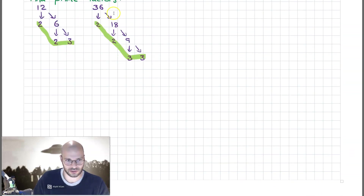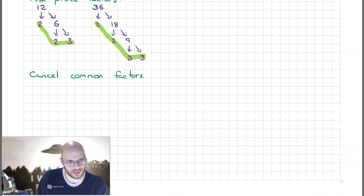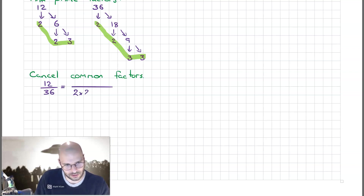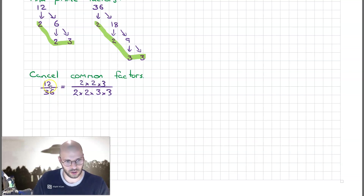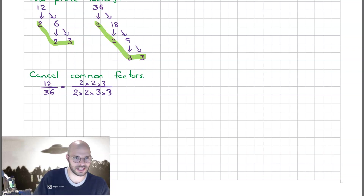The next step is to write this fraction as the product of all its prime factors and then cancel the common factors. So 12 over 36 is the same as writing: upstairs 2 × 2 × 3, and downstairs 2 × 2 × 3 × 3. That is, 12 = 2 × 2 × 3 and 36 = 2 × 2 × 3 × 3.